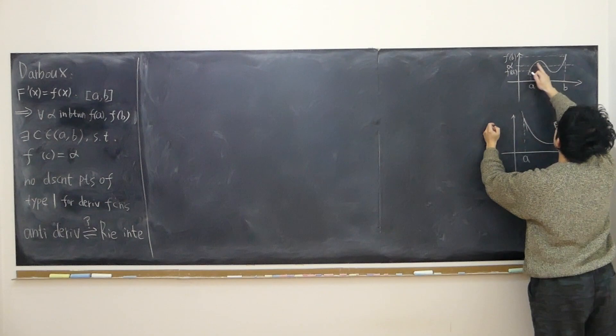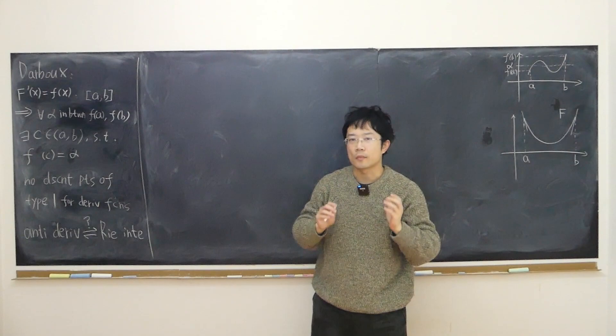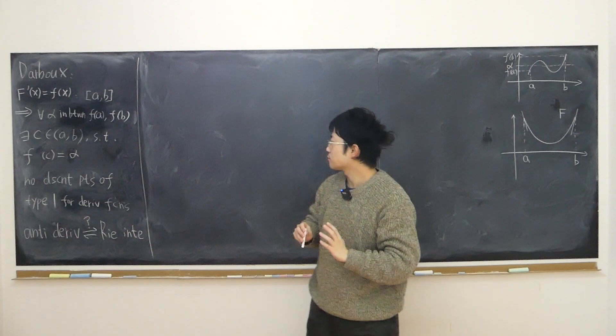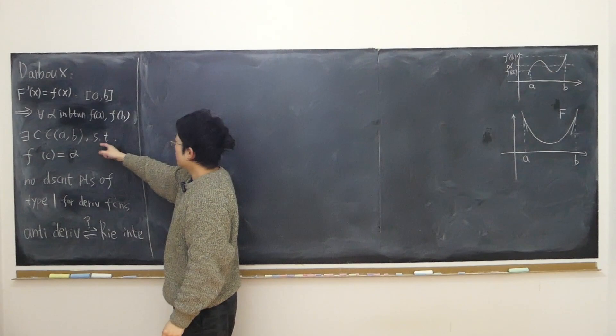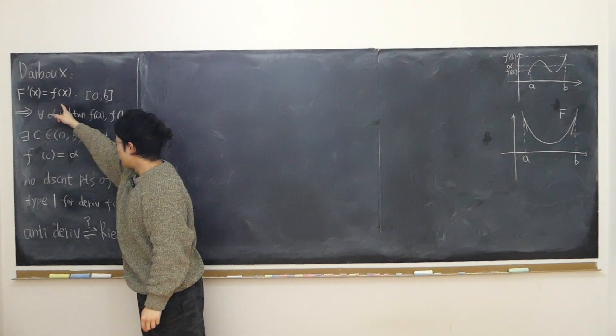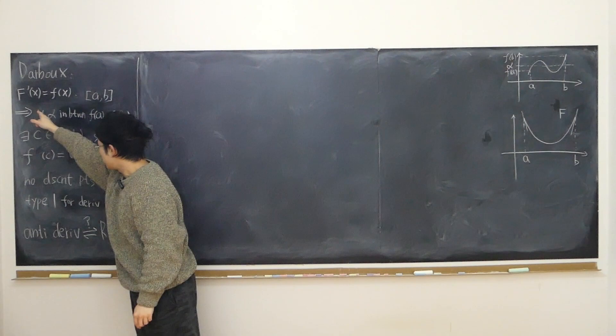So if the function is discontinuous, can the property of the intermediate value still apply? The answer is sometimes yes, sometimes no. A function is a derivative function if it has some anti-derivative capital F whose derivative happens to be little f over the closed interval [a, b].